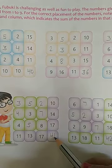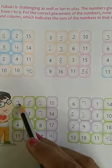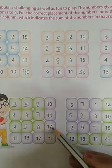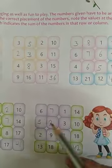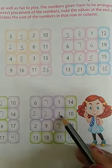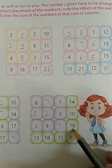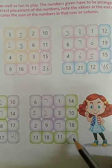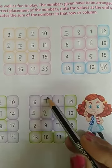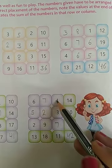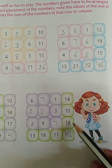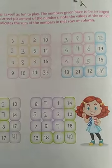इसको इधर से करेंगे तो यह answer आएगा और ऊपर से नीचे करेंगे तो यह answer आएगा। Next: 6+7+1=14, 5+2+3=10, 2+9+7=18, 13+18+11=42। 6+5+2=13, 7+2+9=18, 1+3+7=11, 14+10+18=42. Okay, thank you.